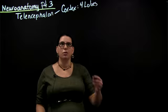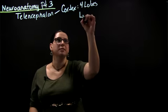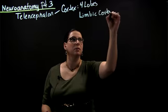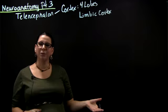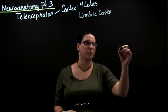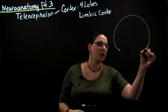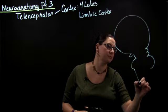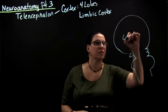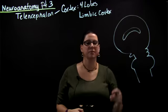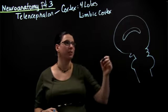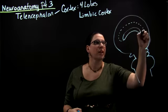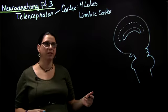There's one other part of the cortex called the limbic cortex. This cortex can't really be seen from an outside view of the brain. If we draw a mid-sagittal section of the brain, here's the corpus callosum, which connects the two hemispheres of the brain. And the limbic cortex is right around that corpus callosum.